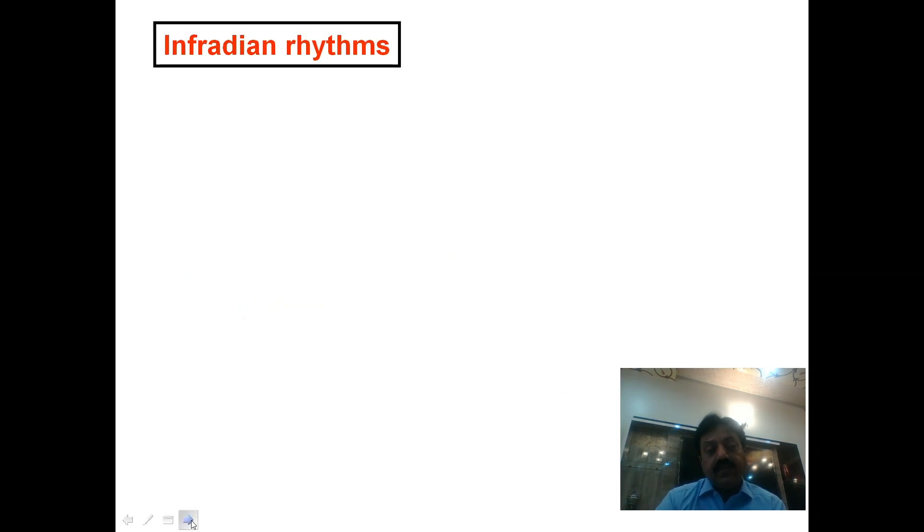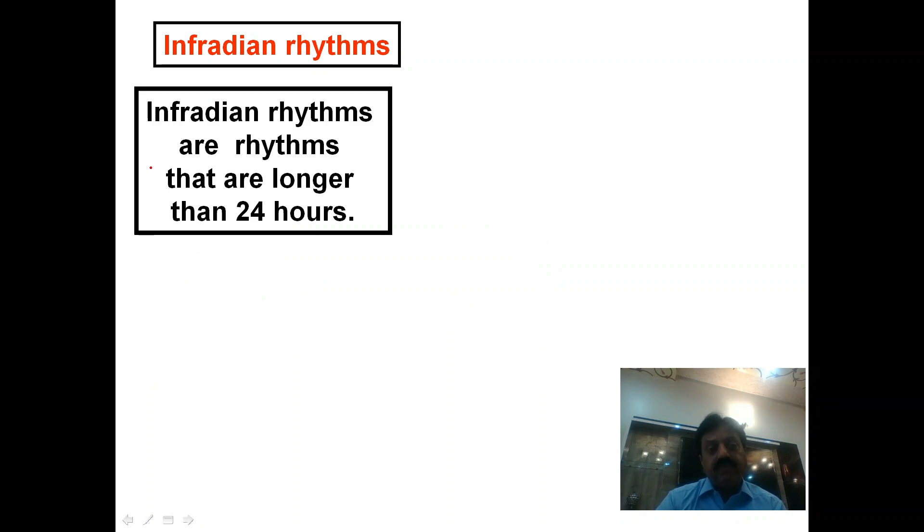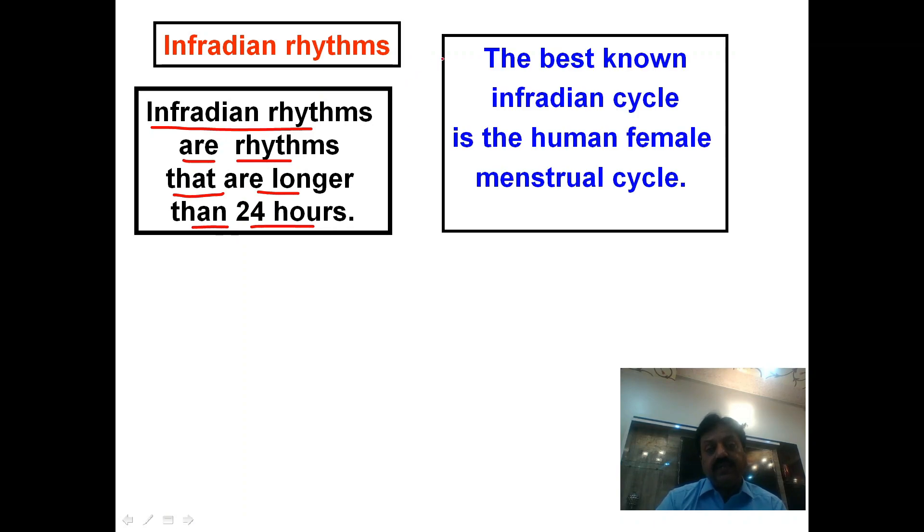Infradian rhythms are rhythms that are longer than 24 hours. For example, the best-known infradian cycle in human females is the menstrual cycle, which has an average 28-day cycle. It is an infradian cycle.